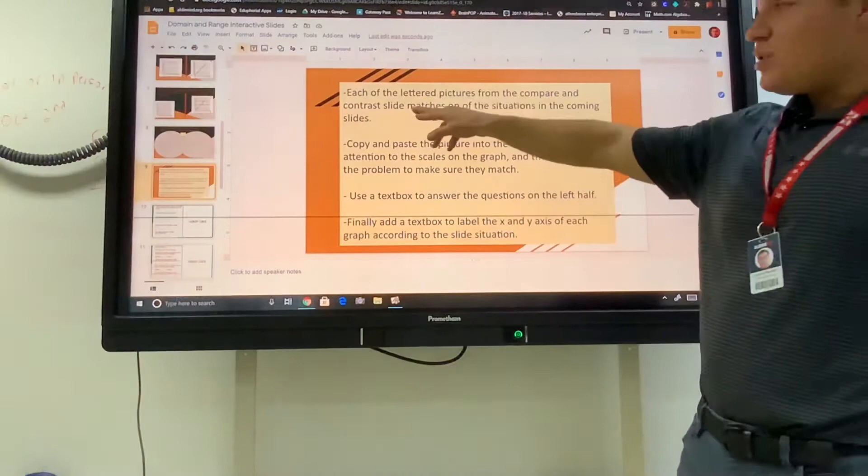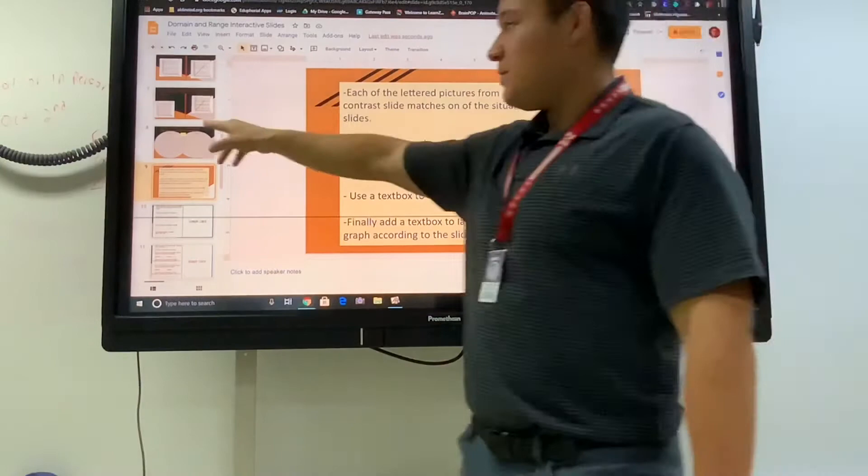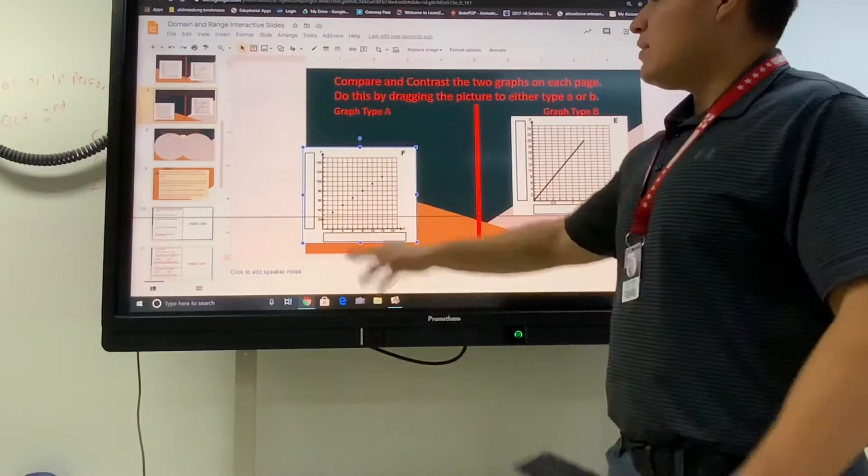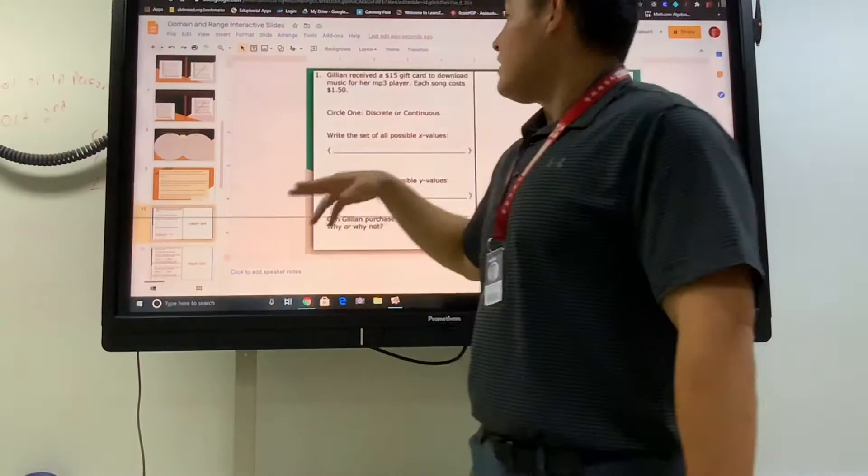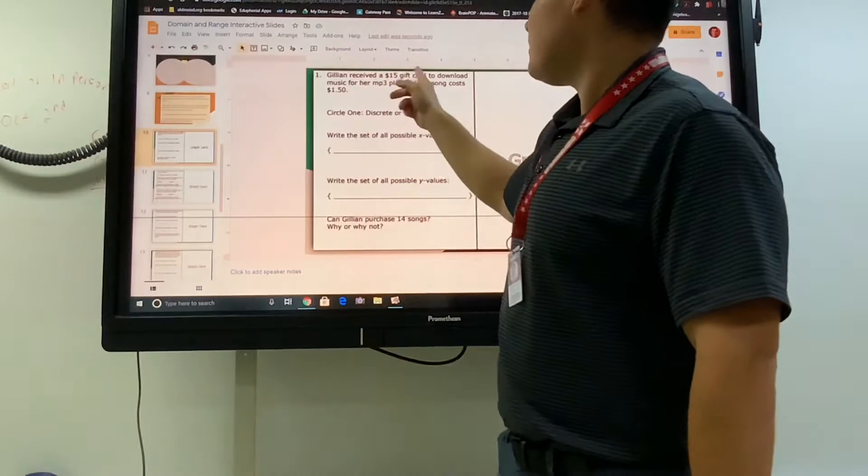Next up we have each of those pictures from the previous slides from the compare and contrast part. You need to copy each of those pictures. This one goes by 20s and 2s, and that picture is going to match one of these examples. It doesn't match that one because that says $15.